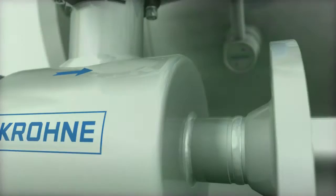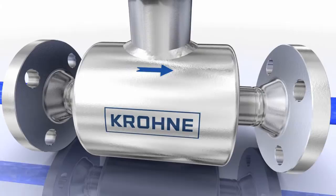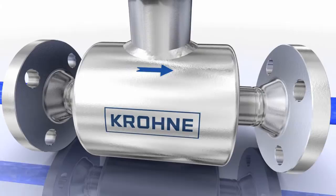The Optisonic 3400 is the definitive multipurpose and all-round ultrasonic flow meter for demanding process industries, such as chemicals, petrochemicals, oil and gas, energy and water. So if you want to achieve more, do it with Krohne.